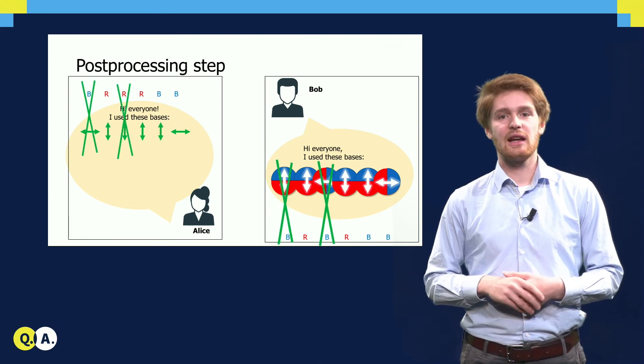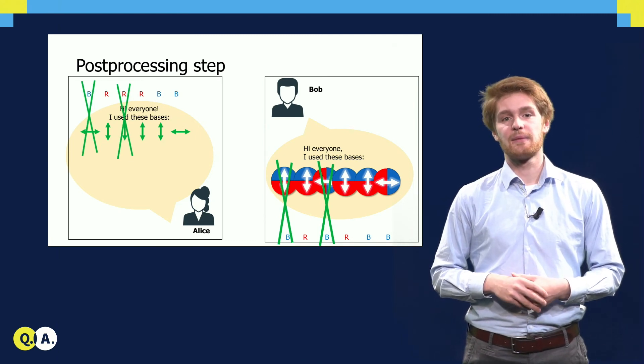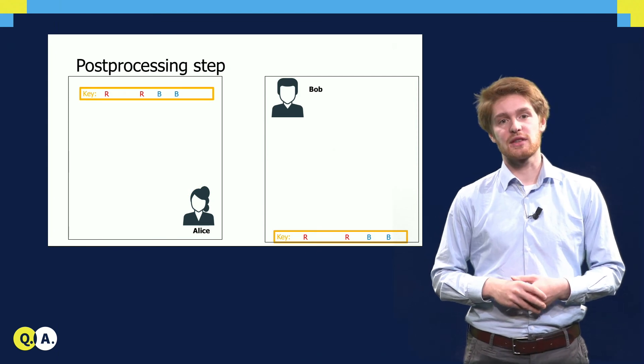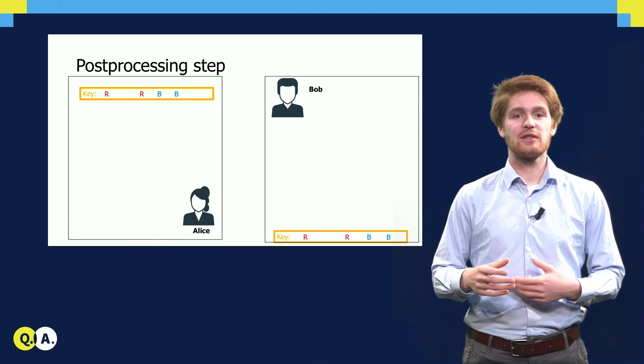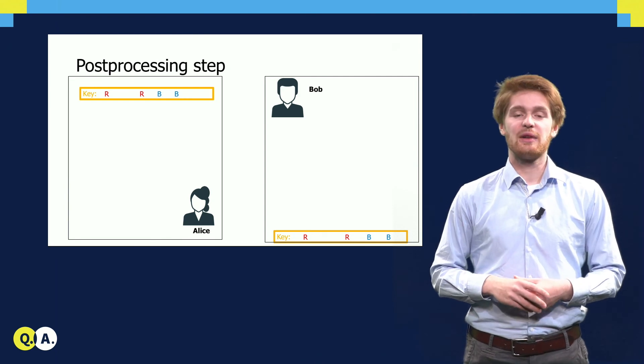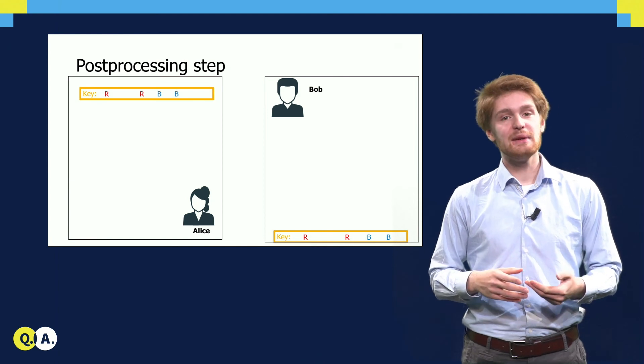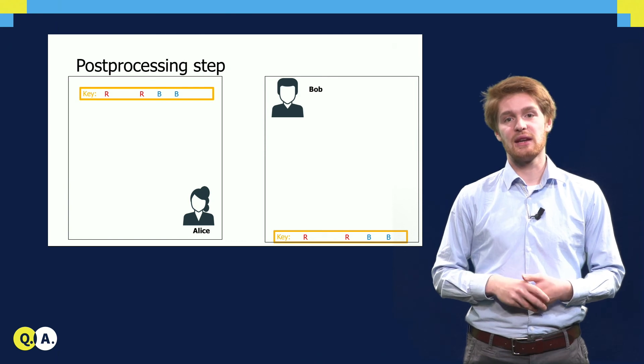After this, Alice and Bob remove all R's and B's where their measurement bases are different. The resulting R's and B's must necessarily be the same on both sides. It is important to realize that the measurement bases on both sides have been made public, but that the R's and B's are still secret. And this means that we can use the R's and B's as a secret shared key between Alice and Bob.